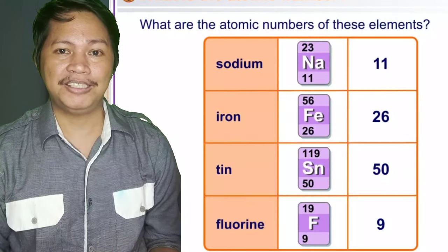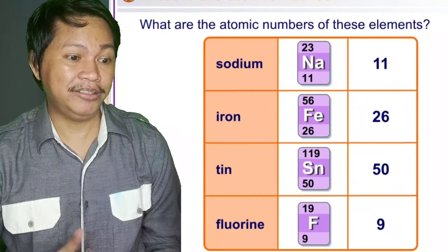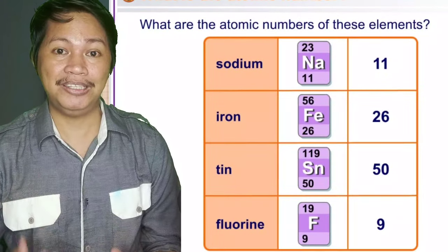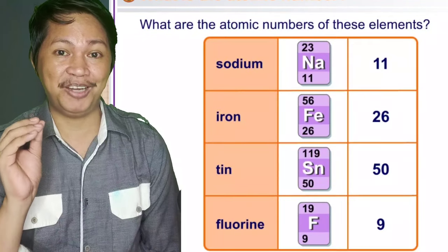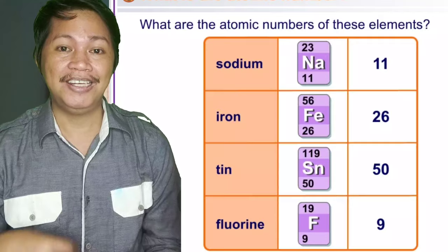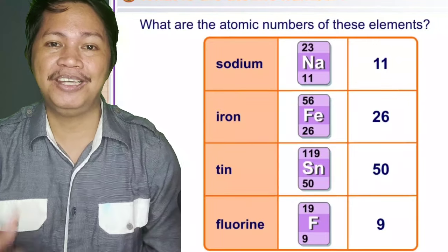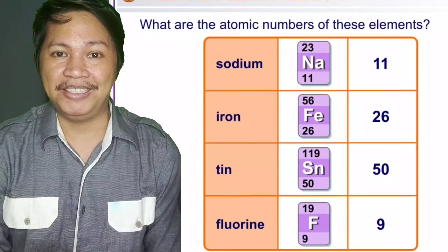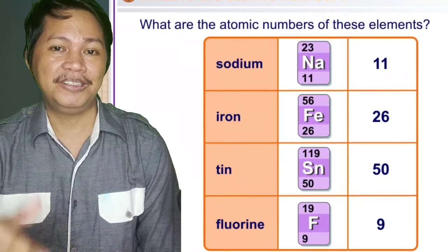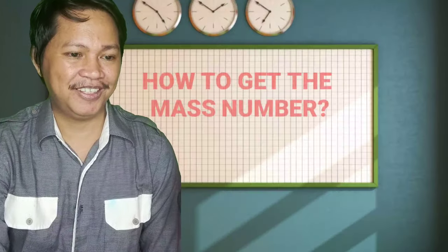So in the table class, you have sodium, iron, tin, and fluorine. You are asked to identify or determine the atomic number. It's very easy, right? Because we all know already that in determining atomic number, that is the smallest number written in the periodic table for the given element. So it's found below the symbol.